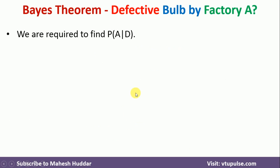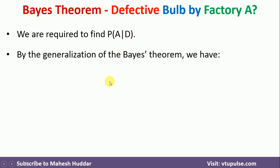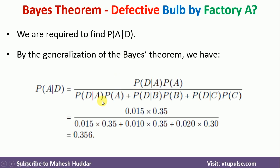We want to find probability of A given D — that is, the probability that the bulb is manufactured at factory A given that it is defective. Using the Generalized Bayes Theorem, probability of A given D equals probability of D given A times probability of A in the numerator, divided by the sum of all possible cases: probability D given A times P(A), plus probability D given B times P(B), plus probability D given C times P(C).